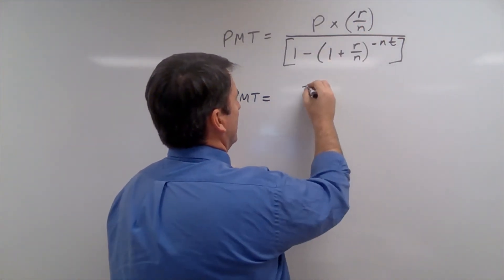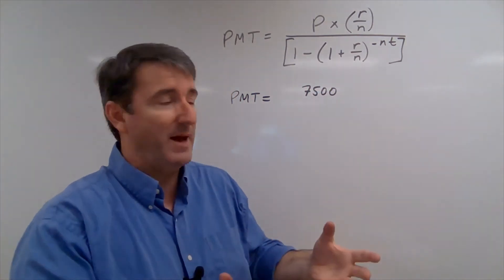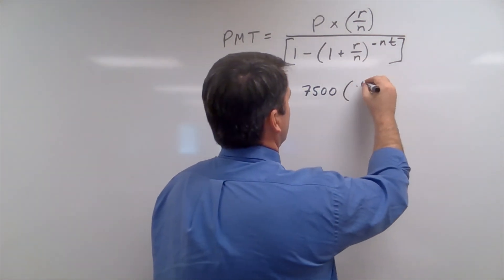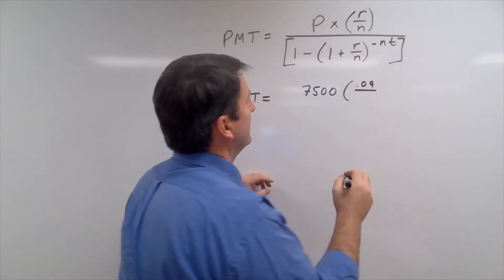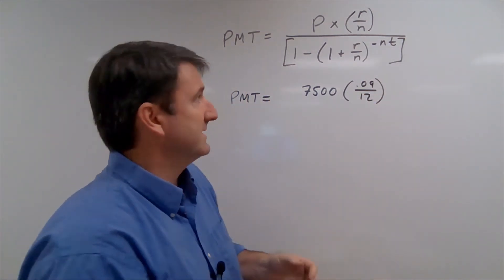So our principal, our starting principal, is $7,500. That's how much we have to pay back. And we're going to multiply that by 0.09, that's our annual interest rate, divided by 12. It's 12 because we're making monthly payments.